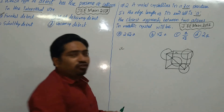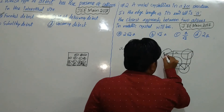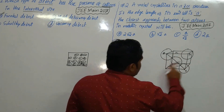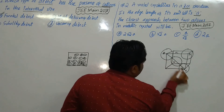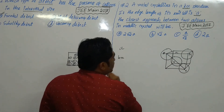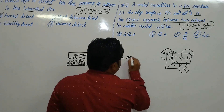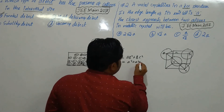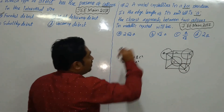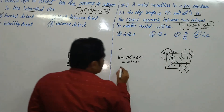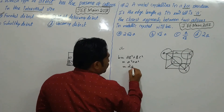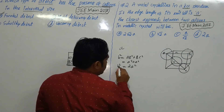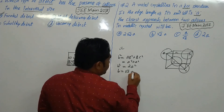Now, what is the length of the face diagonal? Let us label the face corners as A, B, and C. By Pythagoras' theorem, the face diagonal B = √(AB² + BC²) = √(A² + A²) = √(2A²) = A√2. So the face diagonal has length A√2.